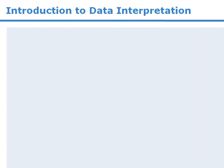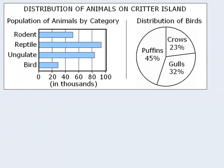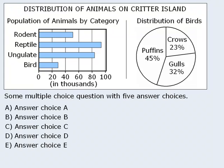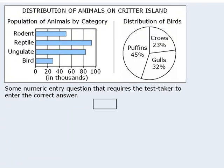In this lesson, we'll take an introductory look at data interpretation questions on the GRE. These questions feature some sort of visual information, such as a graph, chart, or diagram, which you must use to answer regular multiple-choice questions, or multiple-choice questions with more than one correct answer, or numeric entry questions.